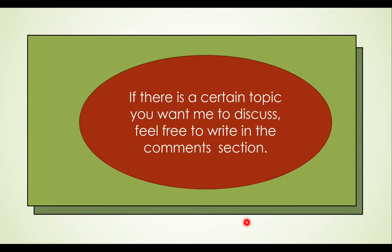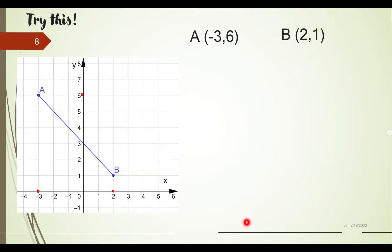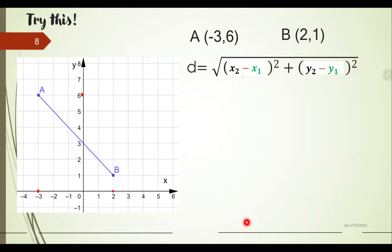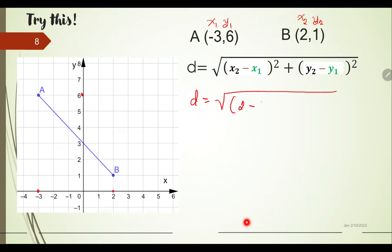Let x₂ = 2, x₁ = −3, y₂ = 1, and y₁ = 6. The distance equals the square root of (2 − (−3))² plus (1 − 6)². Simplifying: 2 minus negative 3 is 2 plus 3, which equals 5, squared gives 25. And 1 minus 6 is negative 5, squared gives positive 25.